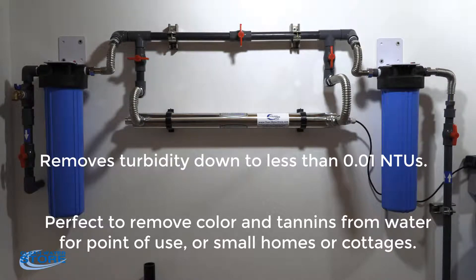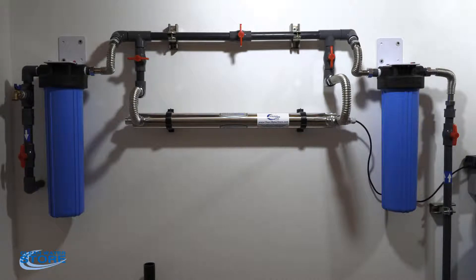These 20-inch units here will give you approximately 10 gallons per minute. So, this is what you're going to want to use for a typical small house. You can put two of them in parallel, which will give you 20 gallons a minute.